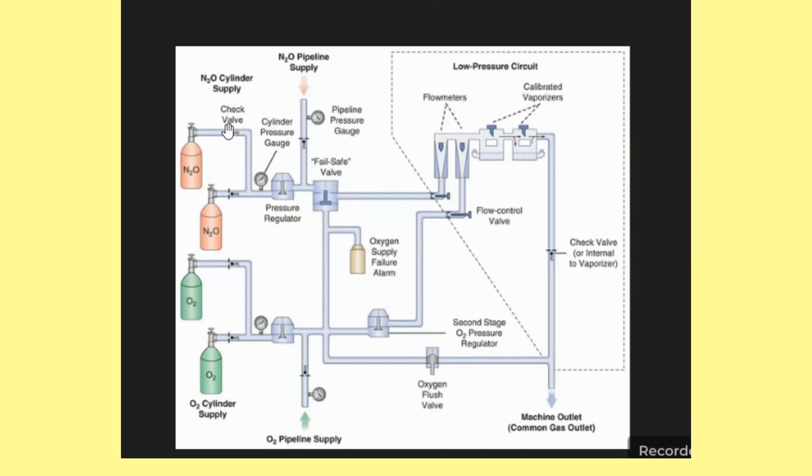So this is a block diagram. We have two gas supply systems: this is oxygen supply and nitrous oxide supply.